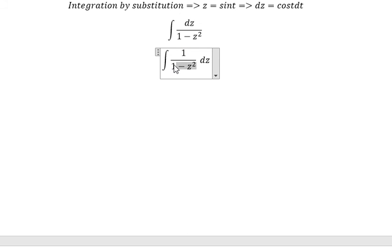1 minus z squared. We got about 1 minus z multiplied with 1 plus z. We have 1 minus z plus 1 plus z, because that's about number 2. So outside the integral, we have 1 over 2.